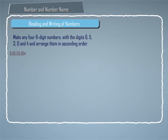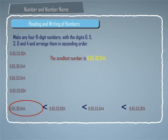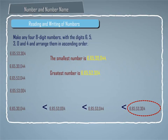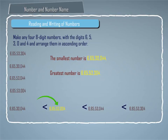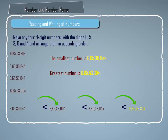So the numbers can be 6,65,53,304. The smallest number is 6,65,30,044 and the greatest number is 6,65,53,304. The numbers arranged in ascending order are listed accordingly.